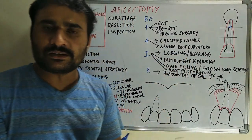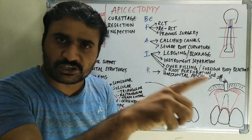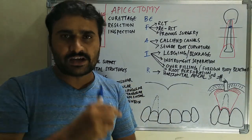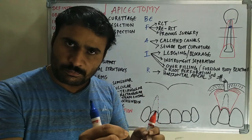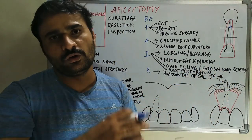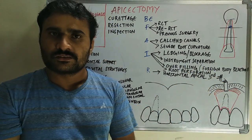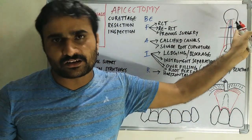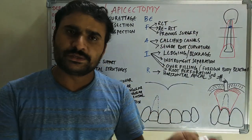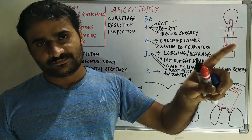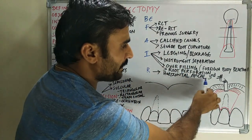Overfilling — over-extrusion of gutta-percha into the periradicular tissue — can cause a foreign body reaction, which is extremely painful. In those cases, apicectomy is indicated. Root perforation in the apical third is also an indication. If perforation is in the middle or coronal third, repair with MTA or similar material is done, but if it is in the apical third, apicectomy is required.